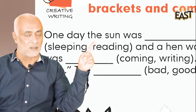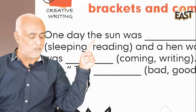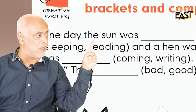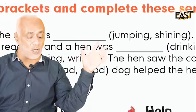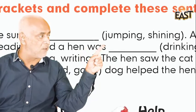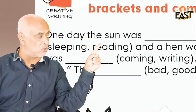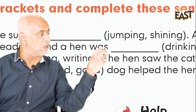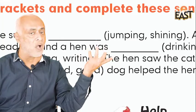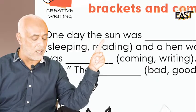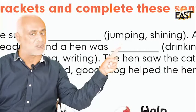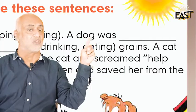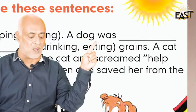Our first activity is to fill these blanks with the correct word. Let's start: 'One day the sun was ___.' We will write jumping or shining. The sun was jumping or shining? So what was it doing? The sun was shining.